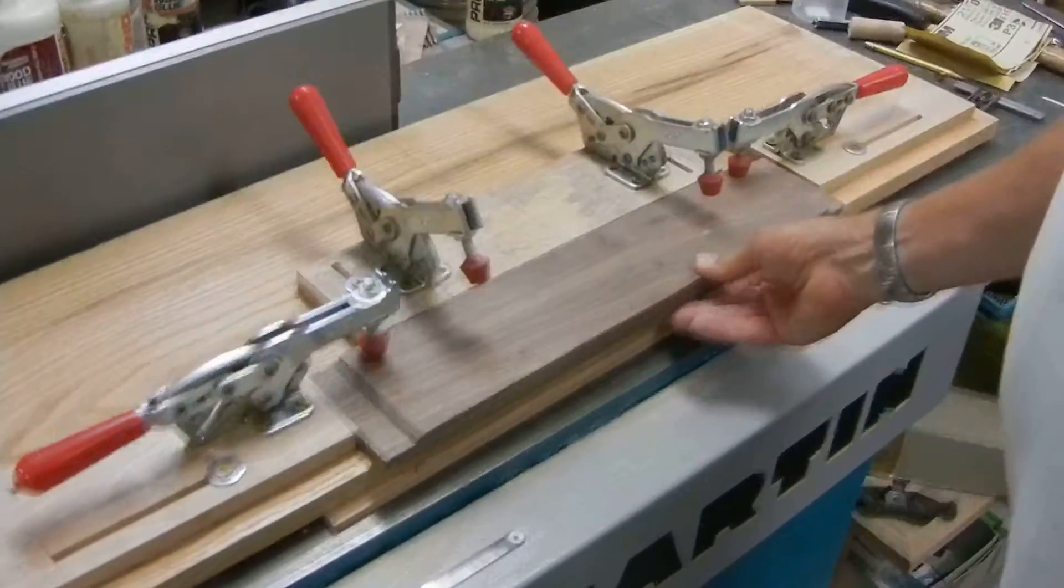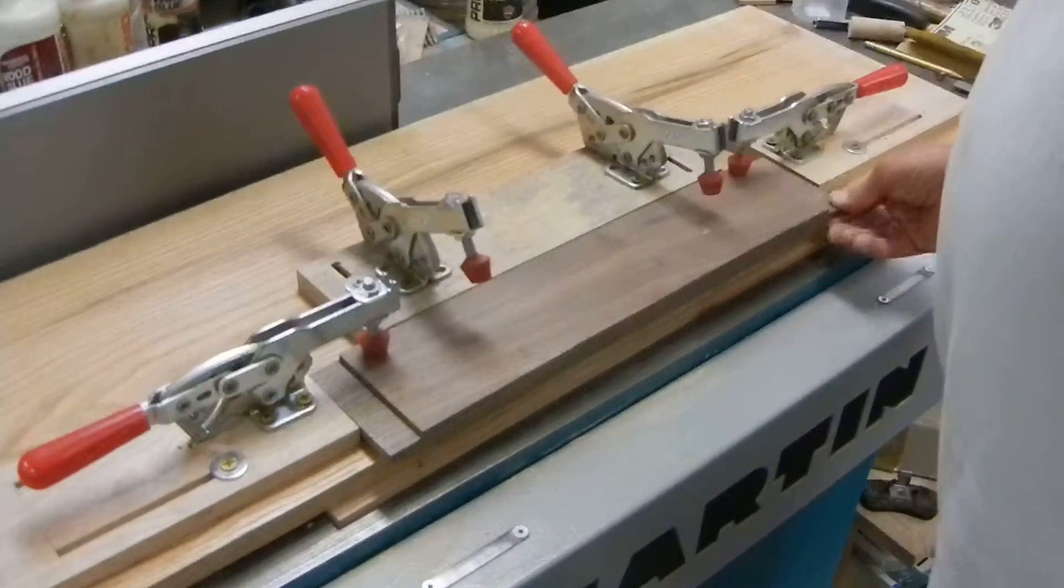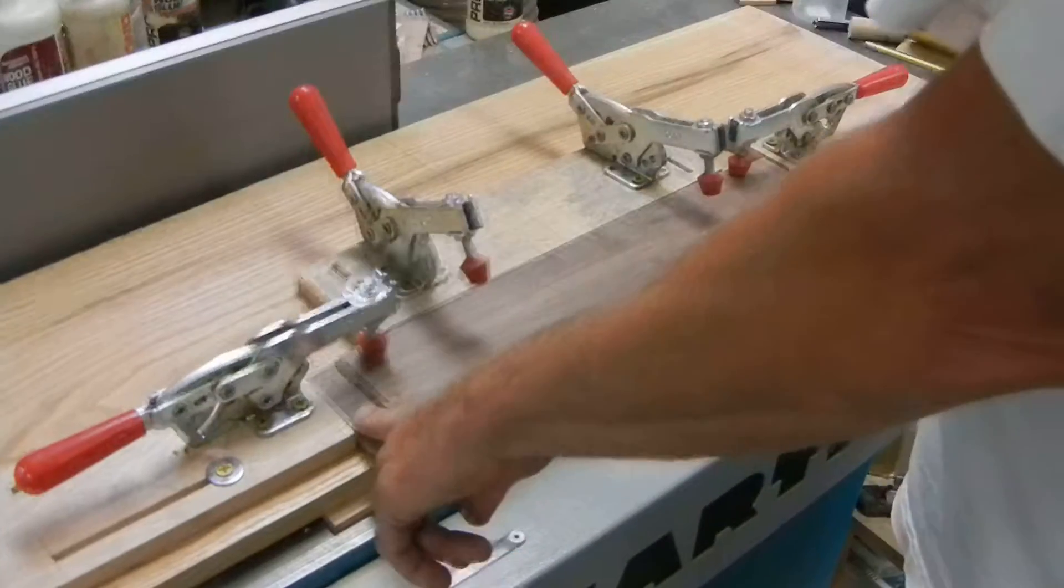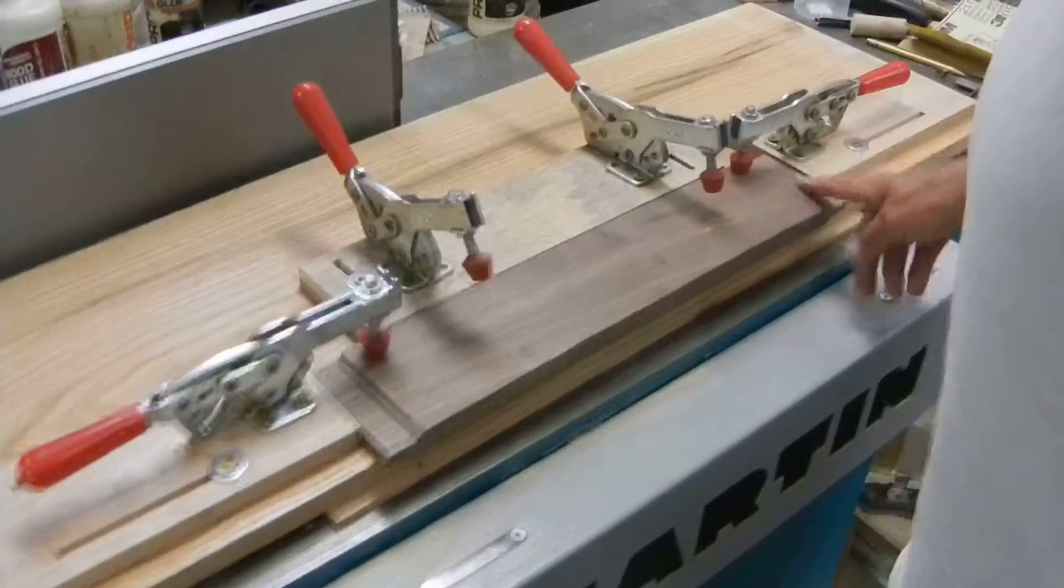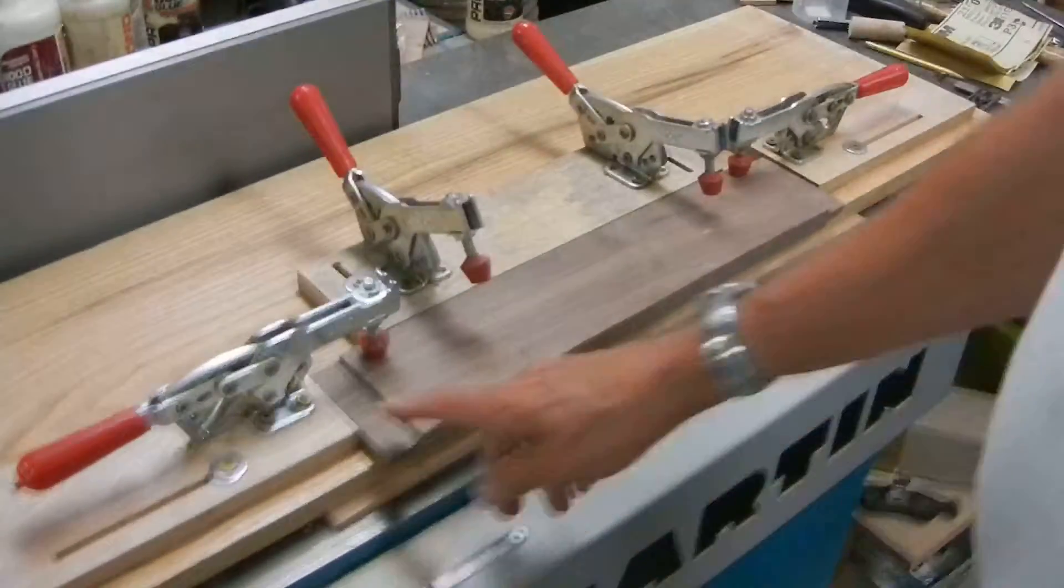This is three quarters of an inch thick walnut with tenons previously cut so they're square with the vertical style. And these are eight millimeter thick tenons.